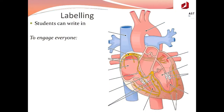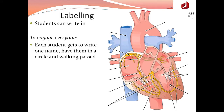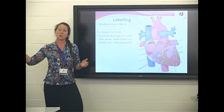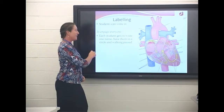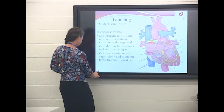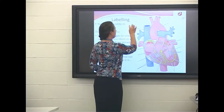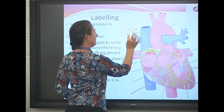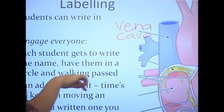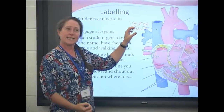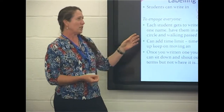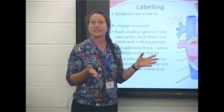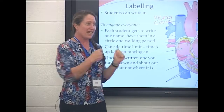Another thing that we do is labelling. You can have your diagrams — this is a picture of the heart — but the question is how to engage everyone. Like I said, only a couple of people can be up here at one time. So you might have your whole class stand in a big circle and the whole circle rotates around. One by one they come up and write something on. So I might write 'Vena Cava' — that's the tube that goes into the heart. You could have the whole class counting down five or ten seconds and they have to quickly write and move on.